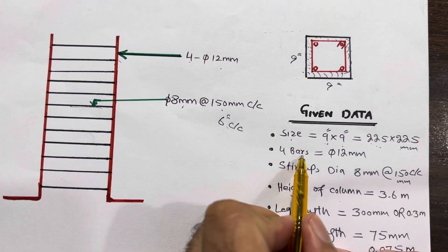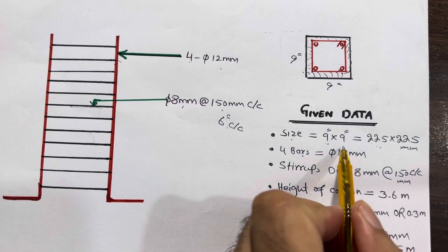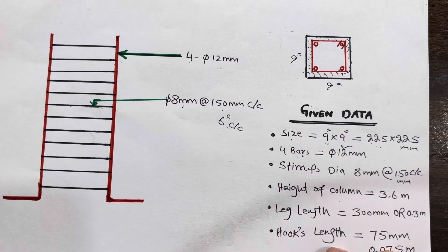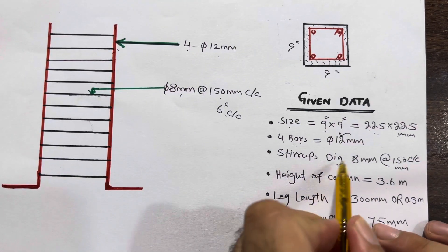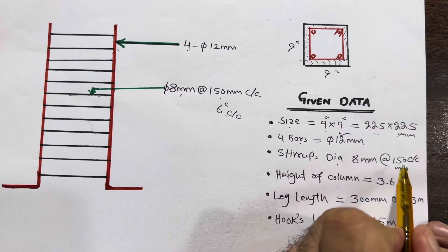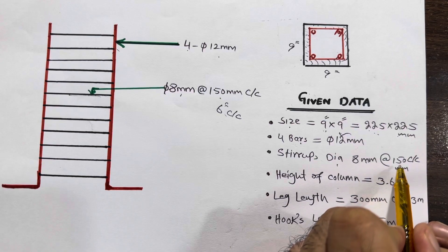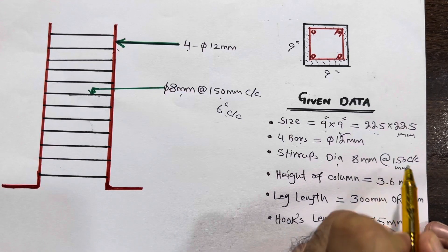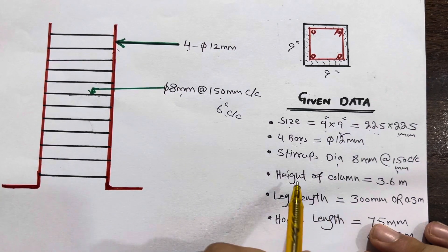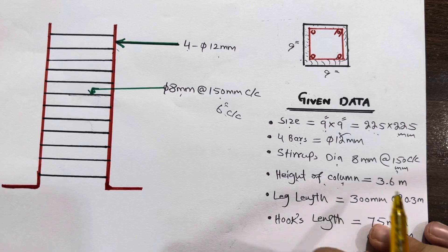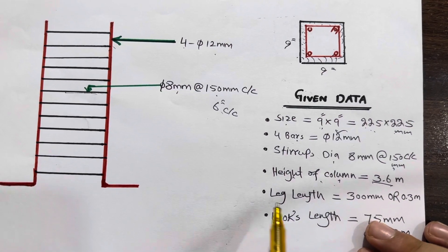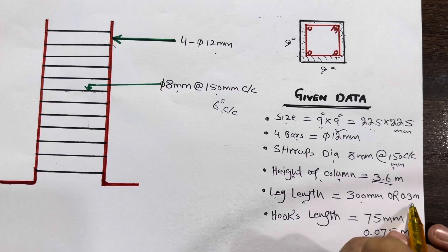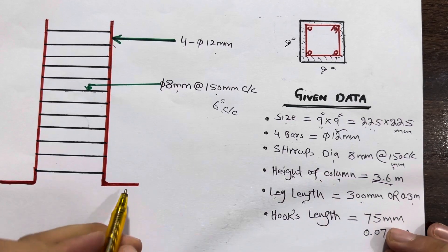We have four numbers of main bars, 12 millimeter diameter. Stirrup diameter is 8 millimeter with spacing of 150 millimeter center to center. The height of the column is 3.6 meter, and the leg length is 300 millimeter or 0.3 meter.